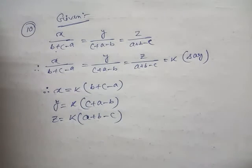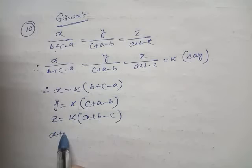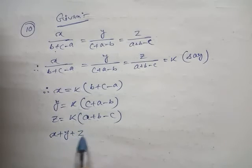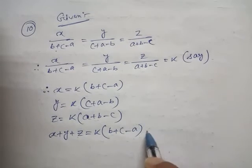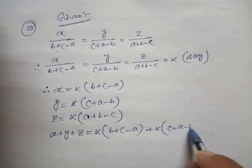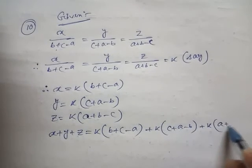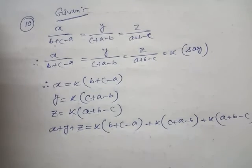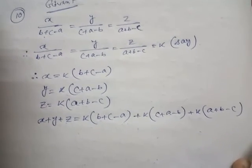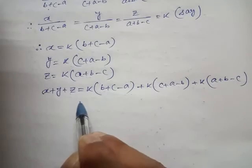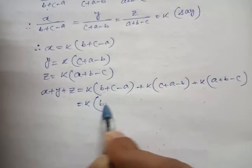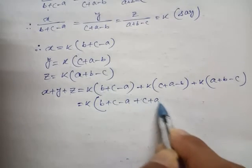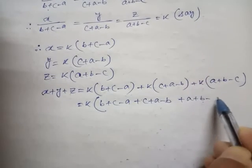After that, if I add all: x plus y plus z equals k(b plus c minus a) plus k(c plus a minus b) plus k(a plus b minus c). Taking k common, the remaining part is (b plus c minus a) plus (c plus a minus b) plus (a plus b minus c). Here, the c and c cancel, a and a cancel, b and b cancel.